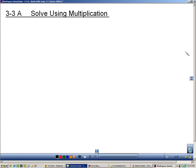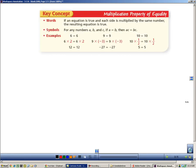Section 3-3A is about solving using multiplication. We're going to continue to solve equations, but this time we're going to add multiplication to the mix instead of just addition and subtraction. Here we're going to use the multiplication property of equality. It's just like the other properties of equality that we learned. It says that you can multiply both sides of an equation by the same number, and the equation stays true.